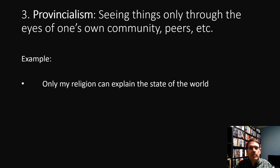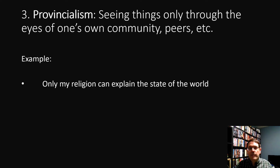The third moral fallacy is called provincialism — seeing things only through the eyes of one's own community, peers, or local conditions. An example is someone saying 'only my religion can explain the state of the world.' This is provincial because they haven't actually looked at other religions, so they don't know whether another religion can explain the state of the world. A simple example is someone saying the city they live in is the best city in the whole world — if they've never lived in another city or studied other cities, how could they possibly know? A person is assuming that since they can't imagine anything better than what they've experienced, there can't be anything better. This is a bad form of argument.